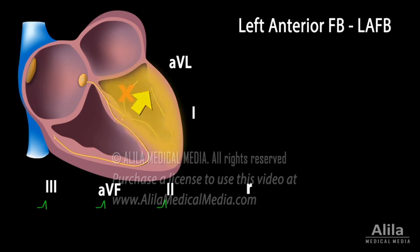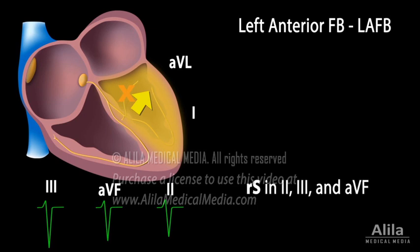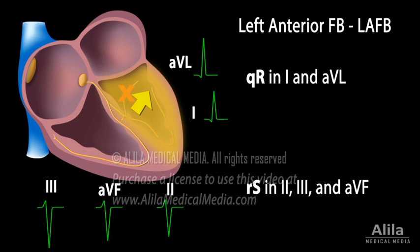The signals then move up and leftward through the myocardium to the rest of the ventricle, producing a large negative deflection, large S-wave, in inferior leads. The reverse is observed in lateral leads, which show small Q, big R patterns.